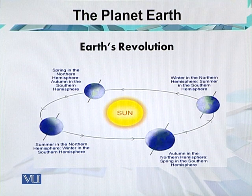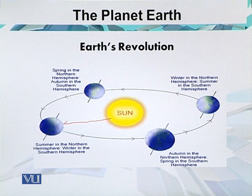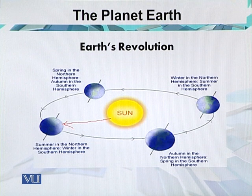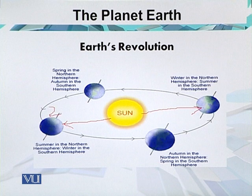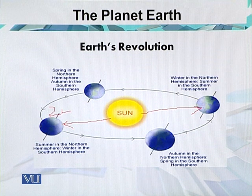On the 22nd of June, the northern hemisphere is in front of the Sun, so it receives the highest temperature during the season — we call it the summer season. Then after six months, it moves to the opposite side of the Sun, and the southern hemisphere receives the highest temperature. On the 22nd of June, the Sun's vertical rays are over the Tropic of Cancer.